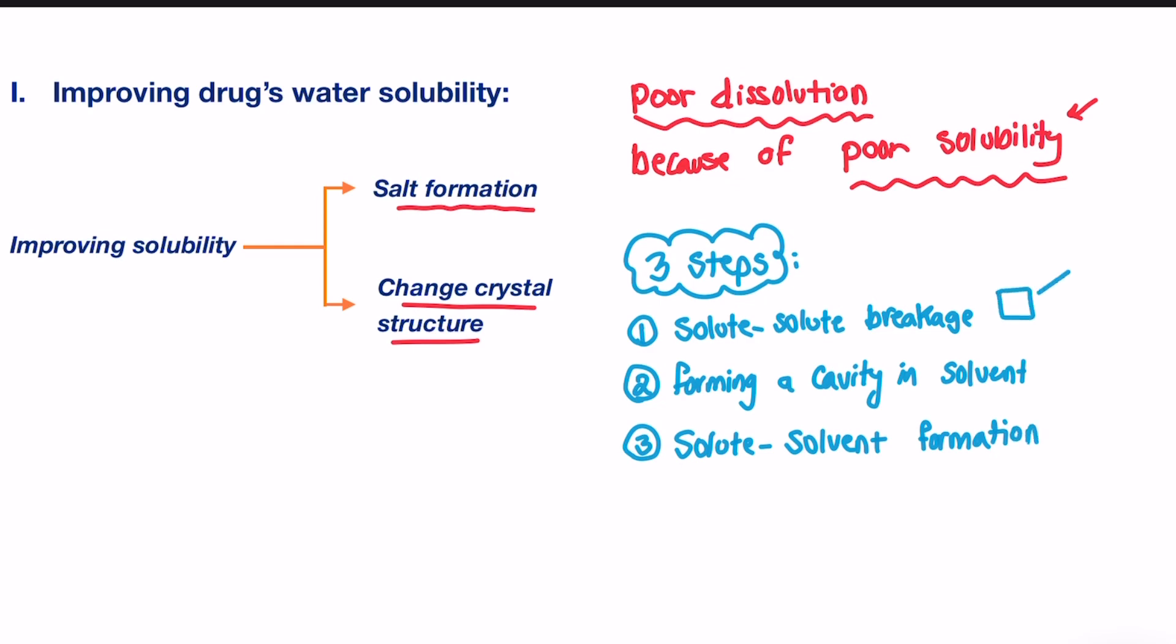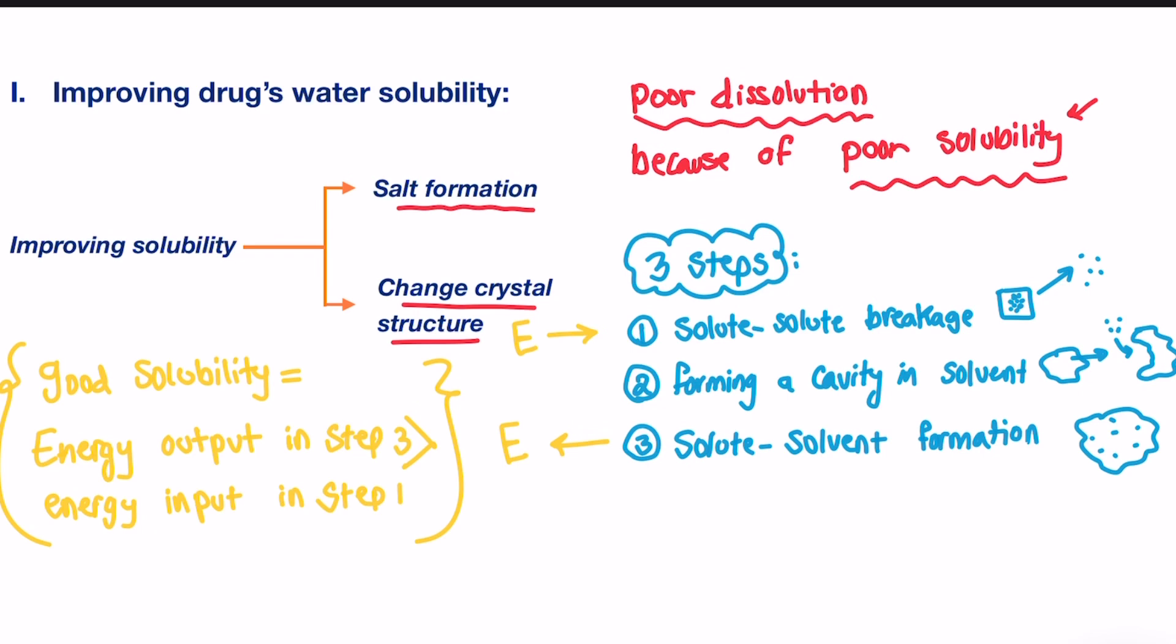Since always the steps that form a new interaction produce energy, and steps that break interaction require energy, step one needs an energy input, while step three gives energy output. And to say a drug has good solubility, energy output in step three must be greater than energy input in step one.